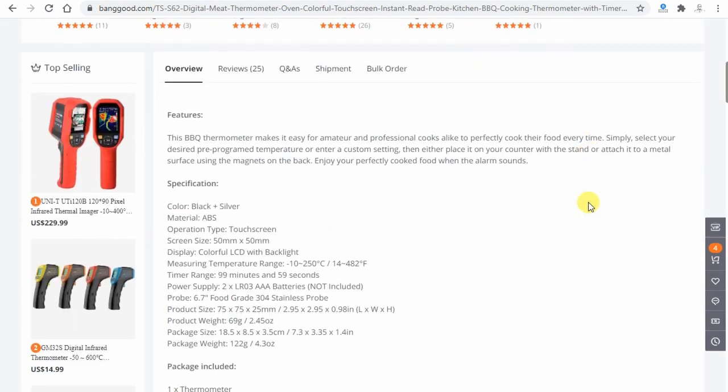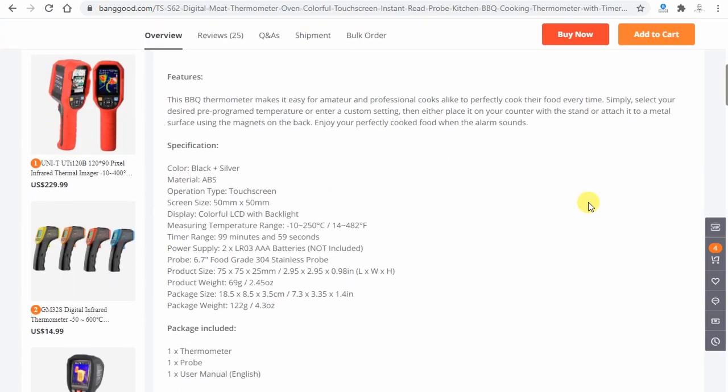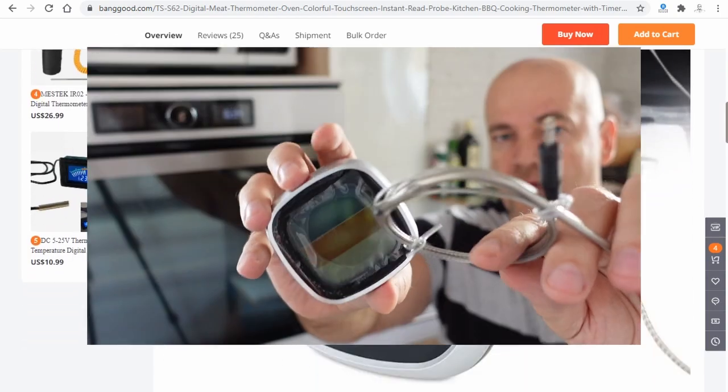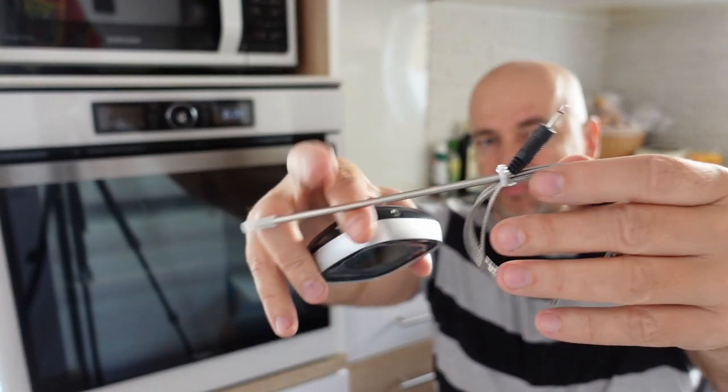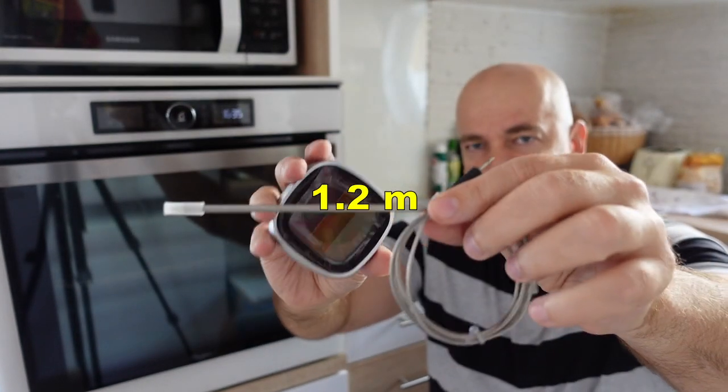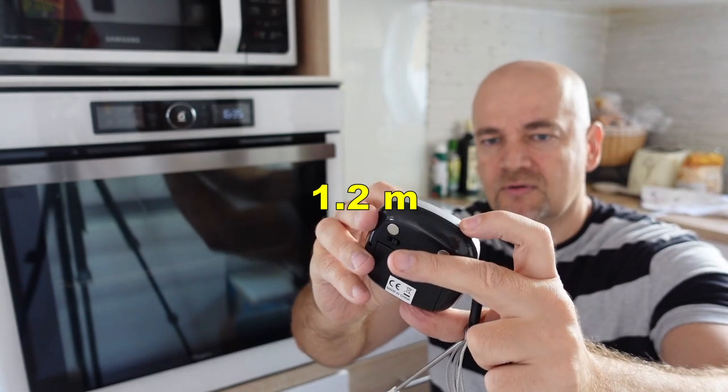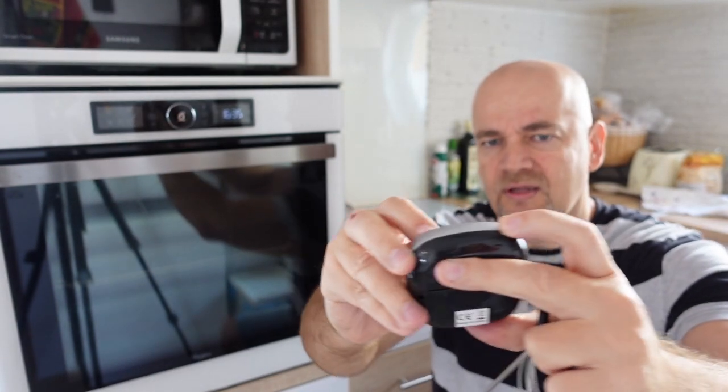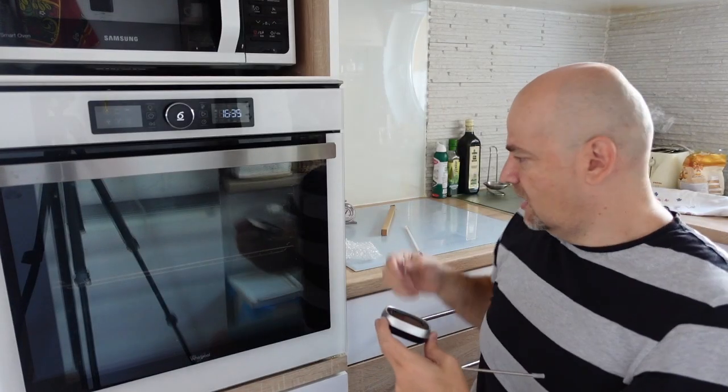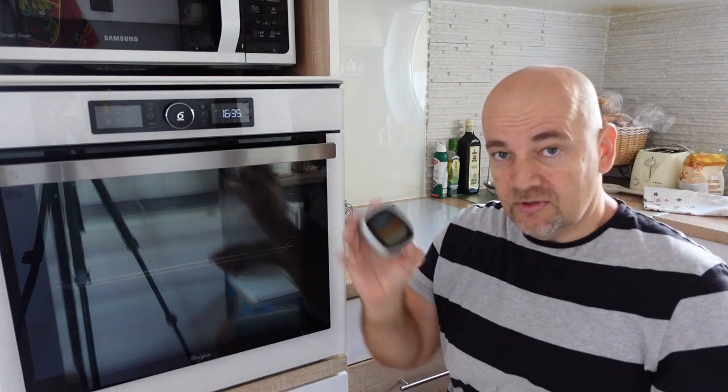They sent me this oven thermometer. Let me take it out. It has this probe which is separate, I'm not sure how long this wire is, I will measure it later. It has some kind of touch display, I think color display. Let me take off the foil. I hope it will do the job. Now I will measure its accuracy and see if I can use it in my future temperature tests for different materials.